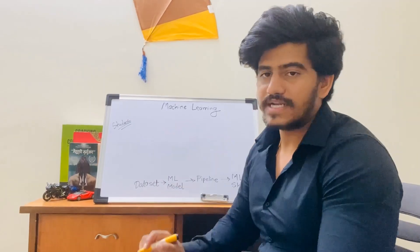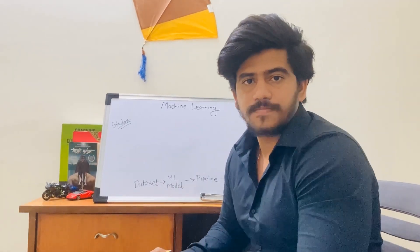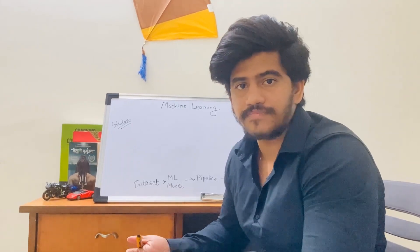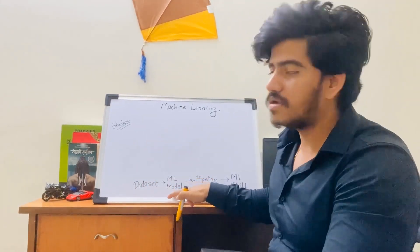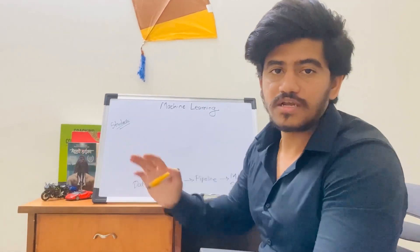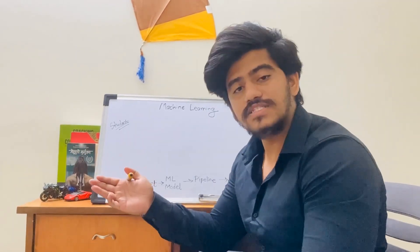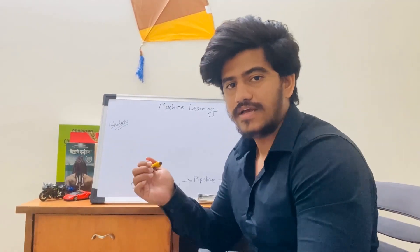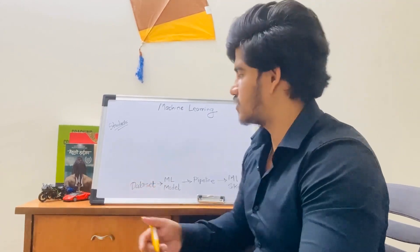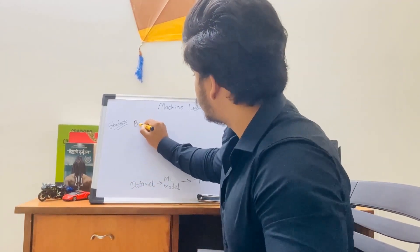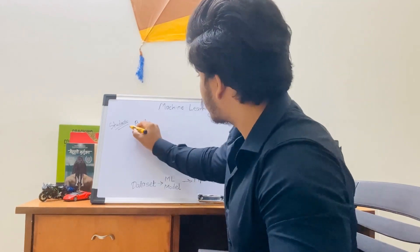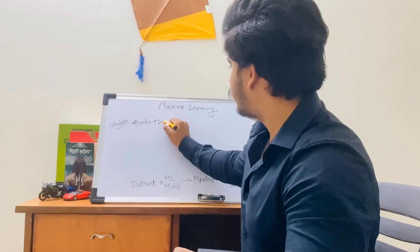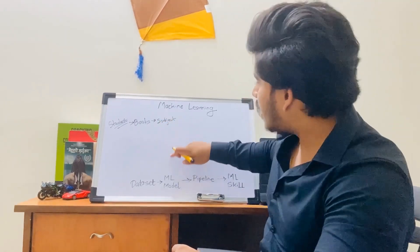The first thing which relates to the dataset for a student is books. Now let's say a student has decided to learn a subject — physics or chemistry. That subject is nothing but the machine learning model. Physics is a machine learning model; chemistry is a machine learning model. To learn them, he needs books. That book from which he is going to learn is nothing but his dataset of knowledge. So the dataset we will compare with books. He needs books and he decided to learn a subject, which is nothing but your ML model.